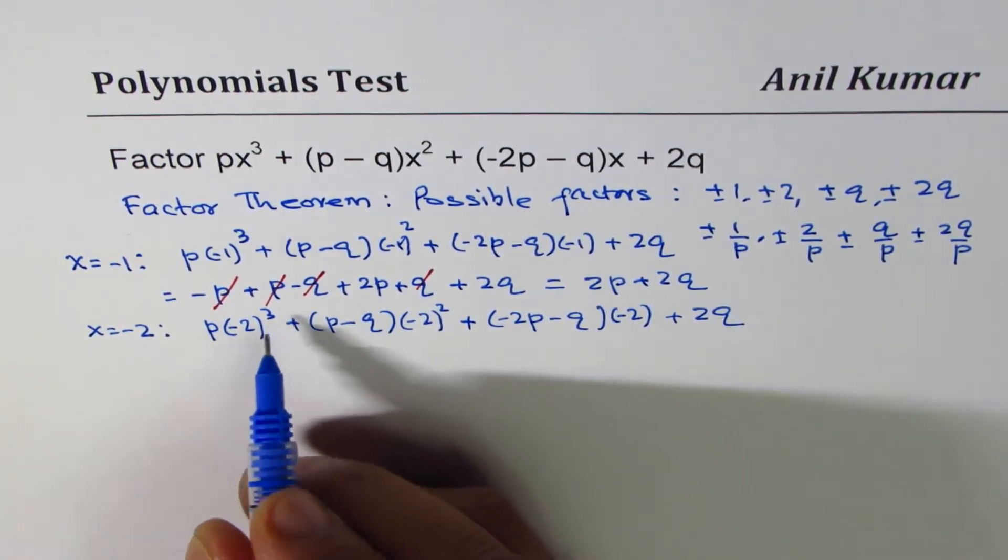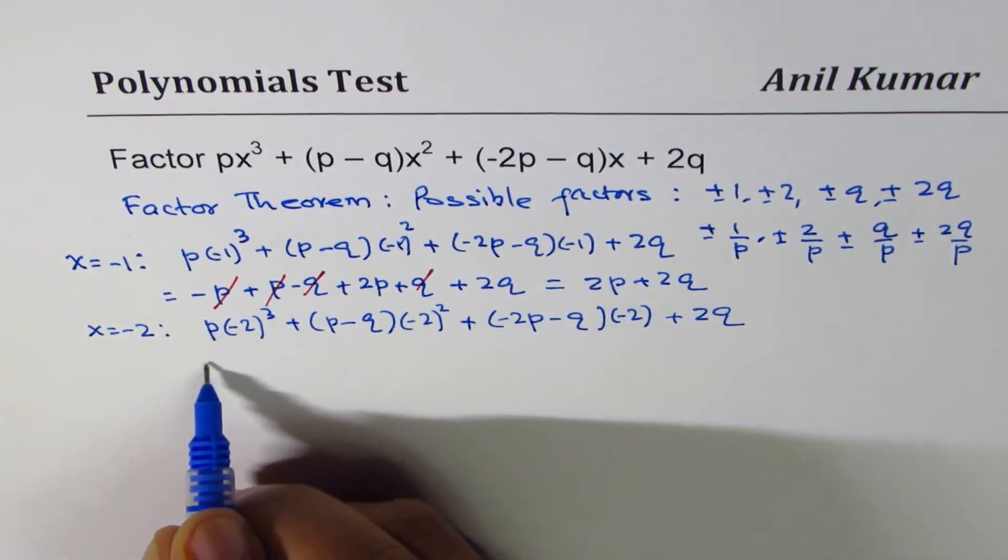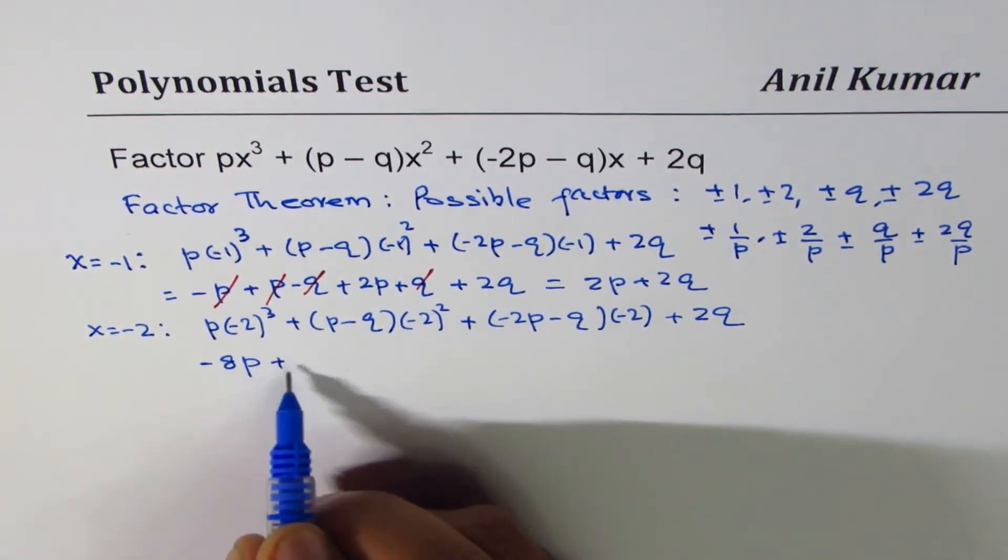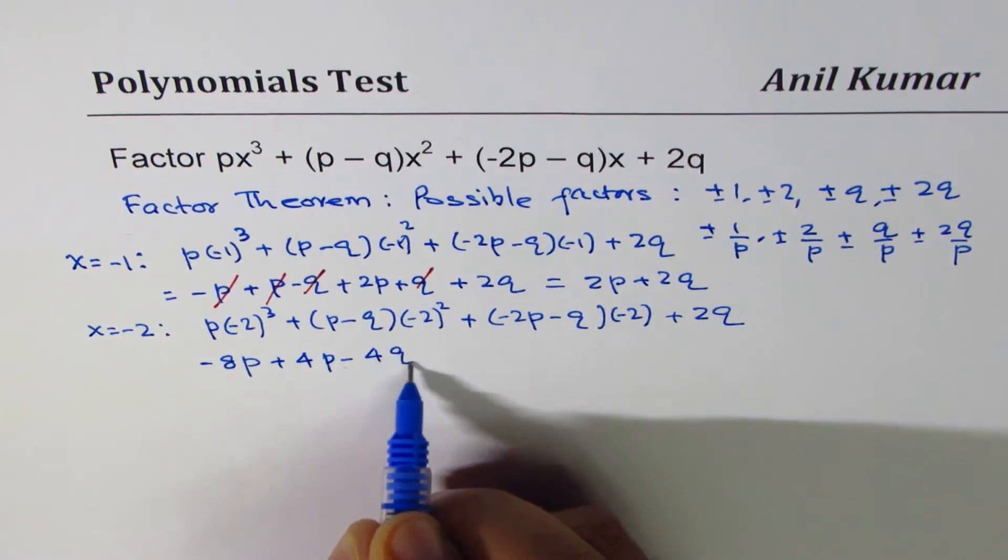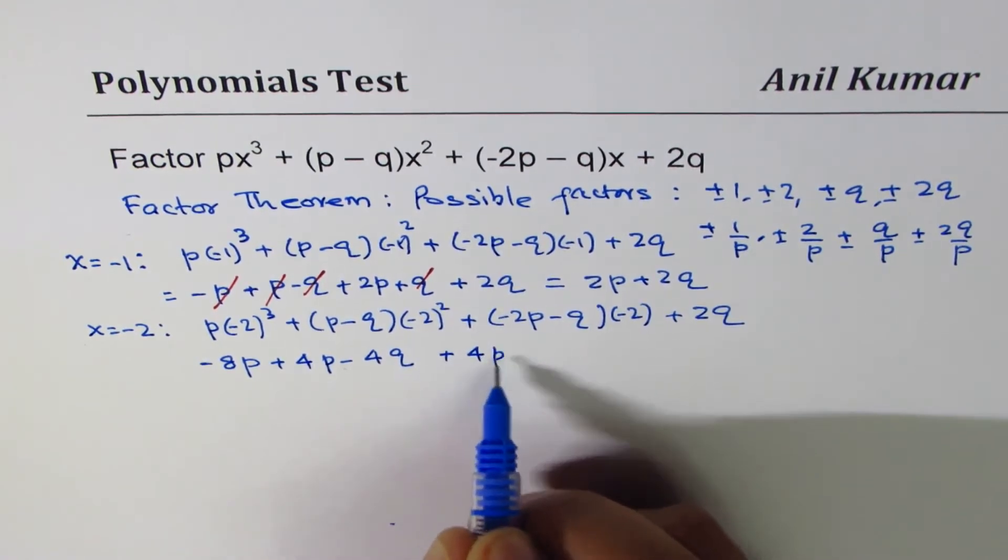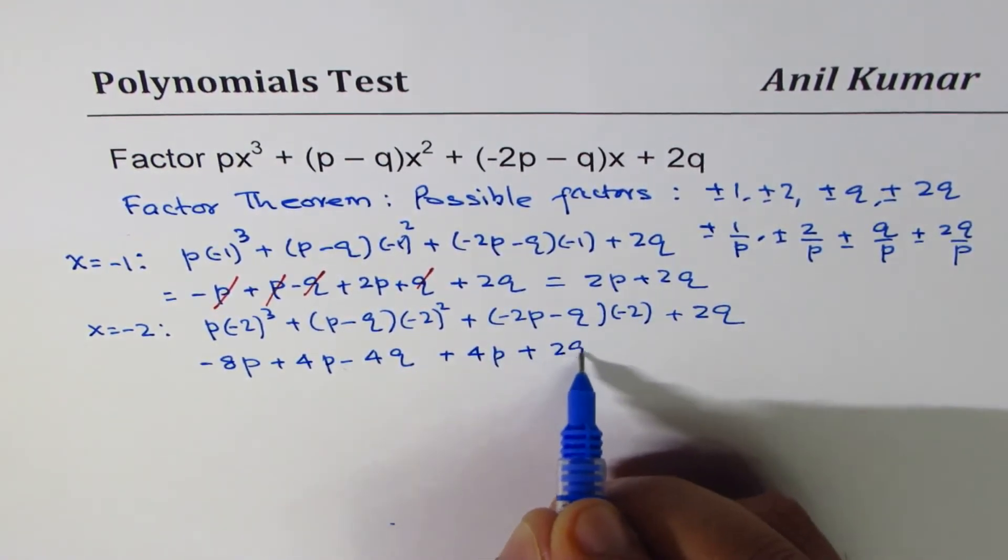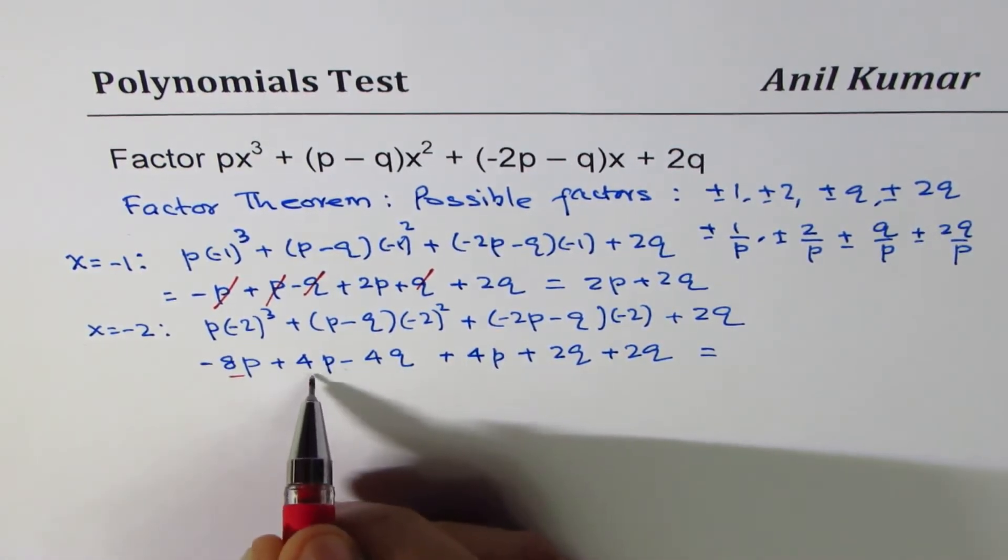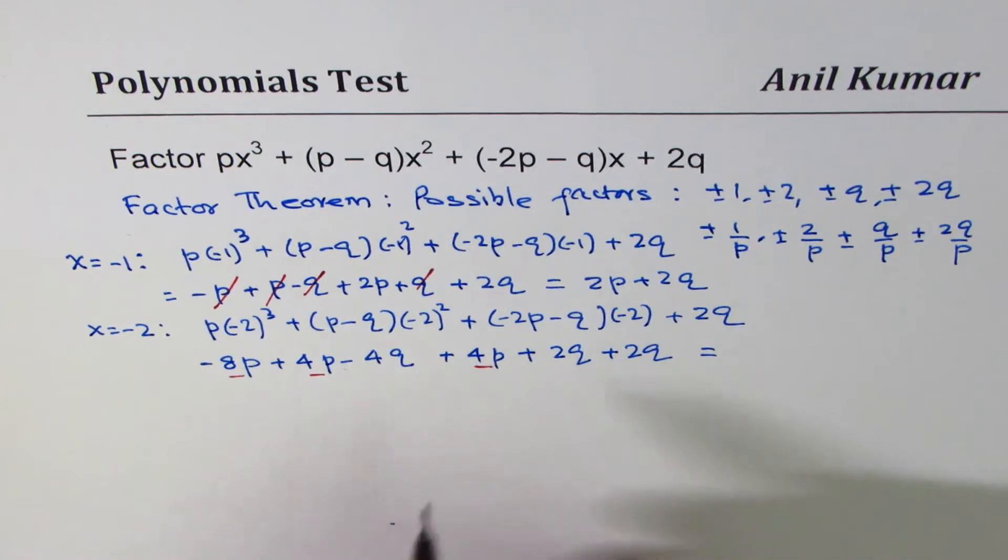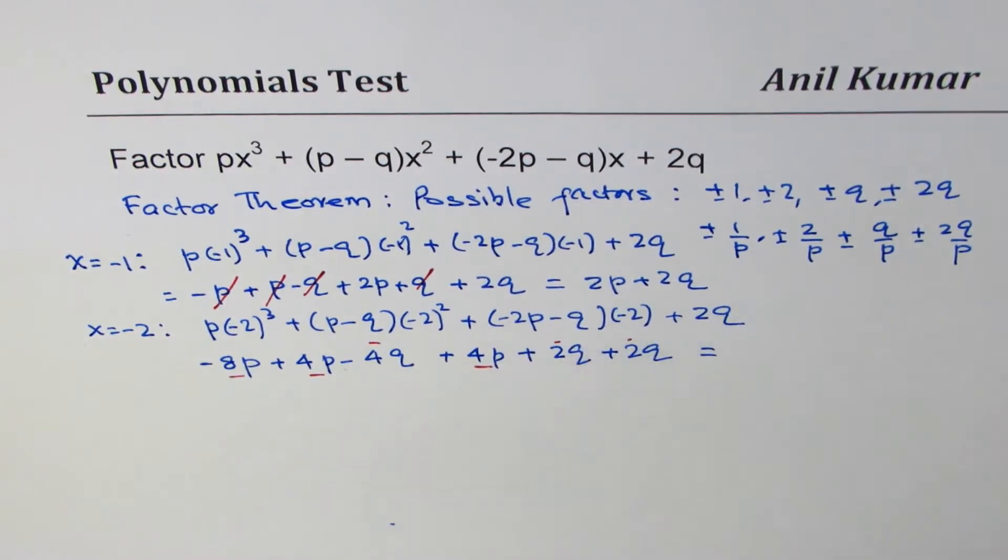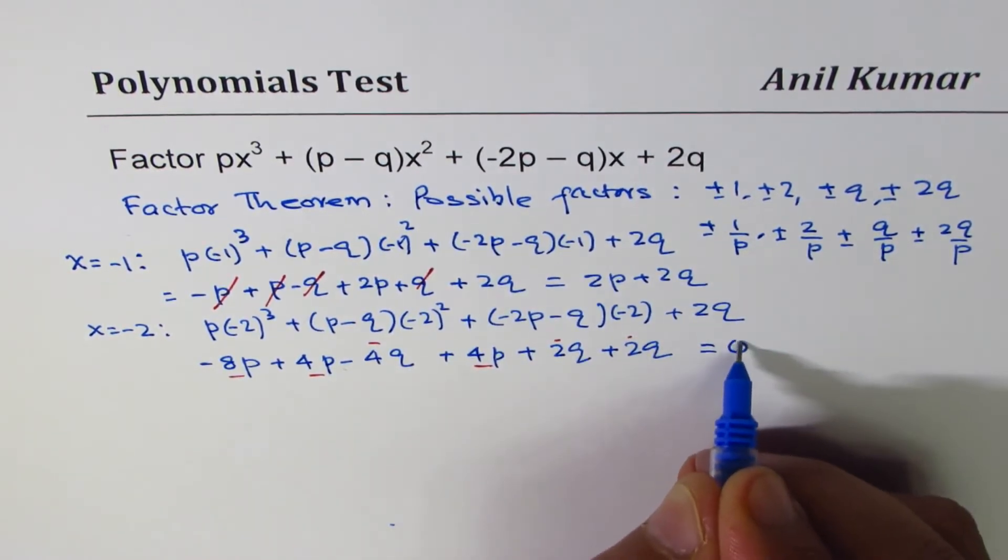And let's expand this. So 2³ is 8 with a negative sign, so we get -8p. This is 4 positive, so we get +4p - 4q. Here we are working with -2, so minus minus is positive 4p, minus minus is positive 2q, and we have +2q. Now let's check this part. So we have -8p + 4p + 4p, so that takes care of p terms. And as far as q is concerned, we have -4q and 2 positive 2q's. So that indeed is 0.